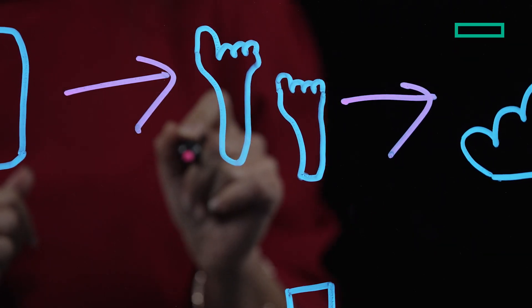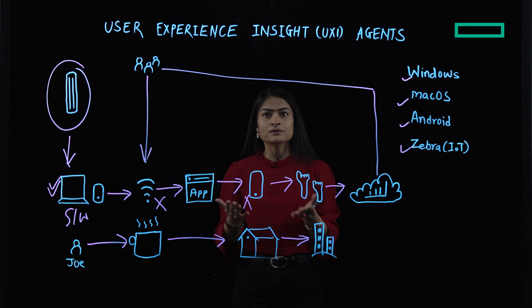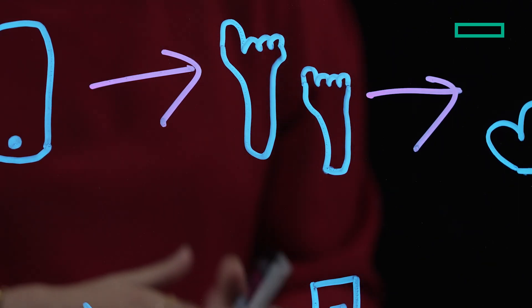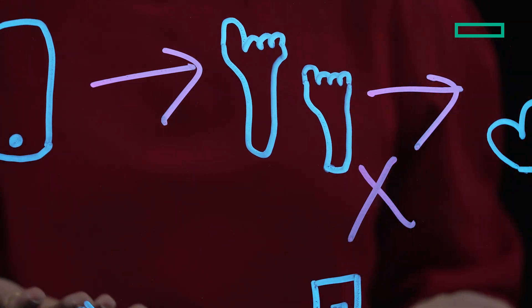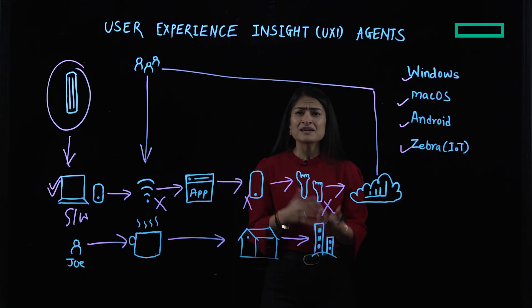And interestingly enough, Joe is connected to a far-off AP when he could easily connect to a nearby AP with a much better RSSI. So seems like we have a sticky client in our environment. Or maybe it's time for Joe to just change his device itself.